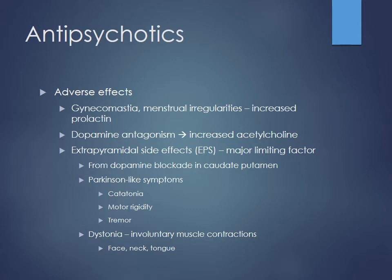Blocking dopamine within the caudate putamen leads to motor dysfunction — parkinsonian effects, catatonia, motor rigidity, tremor, and a shuffling gait. Acutely, dystonia can also occur — these are involuntary muscle contractions that can happen in the face, neck, or tongue. Patients simply cannot control these movements; you may see them sticking out their tongue or jerking involuntarily — they just can't relax when in a dystonic state.